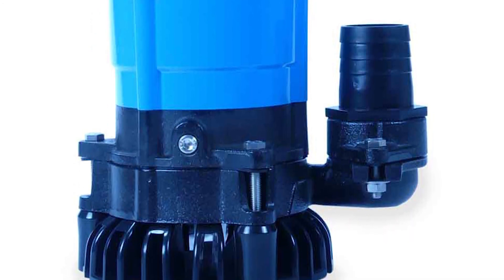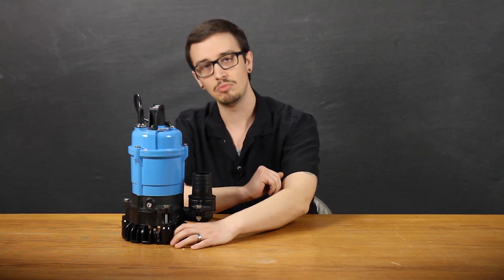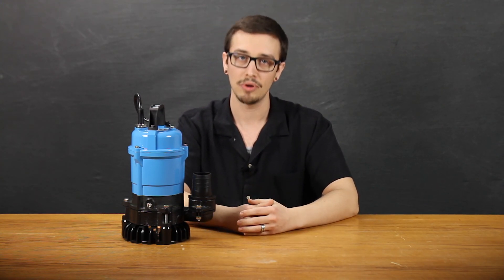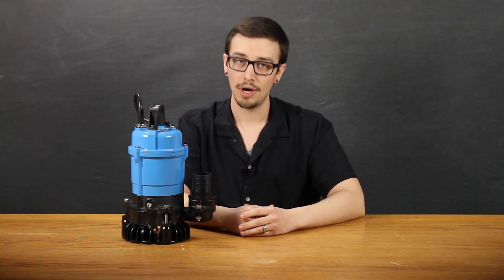A built-in PVC strainer on the bottom of the pump helps to keep out solids. Additionally, this strainer is made of a somewhat flexible PVC material, so it's going to be able to take the occasional bump here and there. This pump includes an agitator to help prevent sediment buildup around the pump.